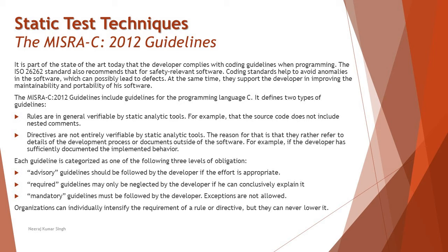The MISRA-C 2012 guidelines include guidelines for the programming language C, and it defines two types of guidelines. Number one, rules are in general verifiable by static analysis tools. Whatever set of rules you define using the language must be verifiable using a static analysis tool — for example, that the source code does not include nested comments. It must be auditable or measurable using test tools; if not, it is not compatible with the standard.